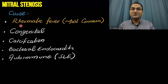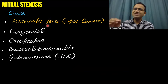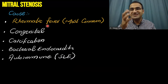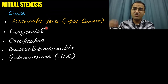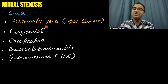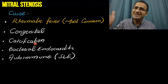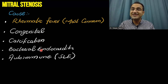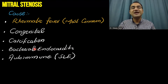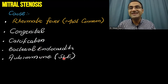Coming to the causes of mitral stenosis: rheumatic fever is the most common cause. Usually patients get rheumatic fever in their childhood and after 20 years they develop mitral stenosis. Remember rheumatic fever as the most important and most common cause. Congenital mitral stenosis can occur. Age-related calcification can also cause mitral stenosis. Bacterial endocarditis and autoimmune SLE can also cause mitral stenosis.